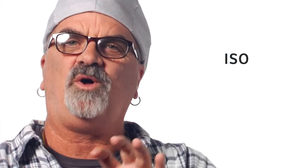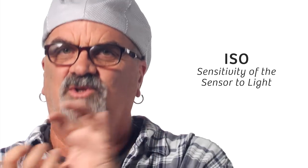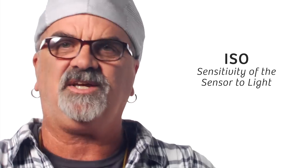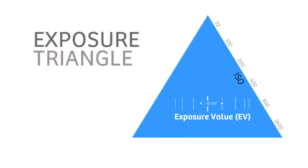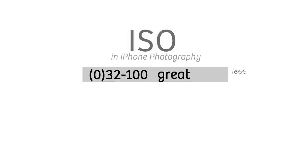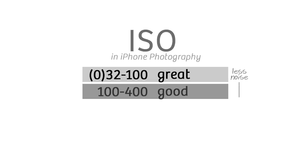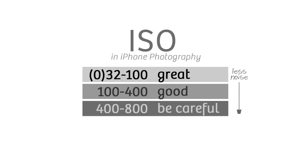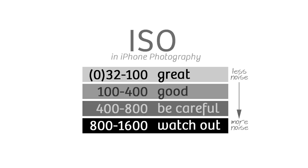ISO refers to the overall sensitivity of the sensor to light. On the iPhone 6, the ISO range goes from ISO 32 to ISO 1600. Low ISO usually means low noise; high ISO usually means high noise. I like to group my ISOs into four simple categories: zero to 100 — great; 100 to 400 — good; 400 to 800 — be careful; 800 to 1600 — watch out.